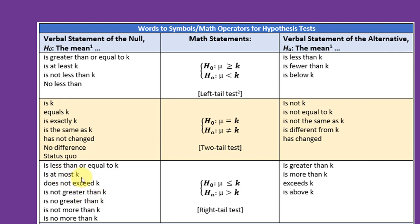Is at most k means it is less than or equal, so that's a null. Exceeds k is above k is a greater than symbol, therefore the claim would be the alternative.